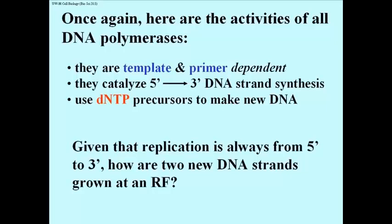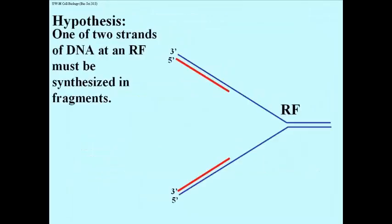We know that all DNA polymerases catalyze 5' to 3' strand growth, and that no DNA polymerase can synthesize DNA 3' to 5'. Since this is true, how can we rationalize replication of both strands against their templates at a replication fork? The only reasonable hypothesis was that while one strand could be synthesized continuously, as the replication fork keeps unwinding, at least one DNA strand would have to be synthesized in pieces or fragments that would later be stitched together.